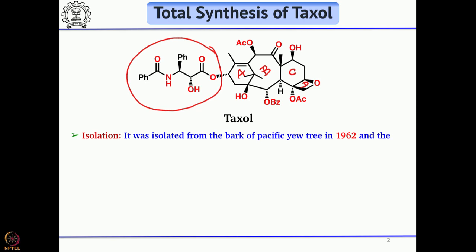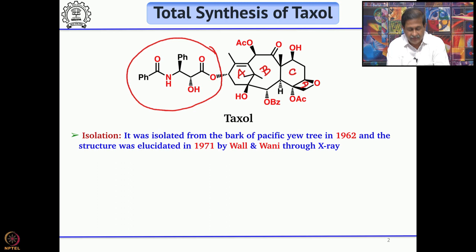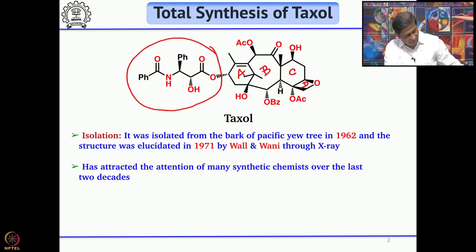Taxol was isolated from the bark of the Pacific Yew tree back in 1962, but the elucidation of the structure took quite some time — almost 10 years to get the correct structure. It was isolated and elucidated by two natural product chemists, Waal and Waani, who proposed the structure through X-ray. This molecule is quite complex and, more importantly, showed wonderful activity against ovarian and breast cancer.